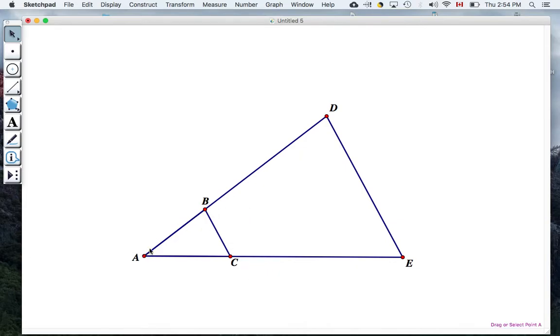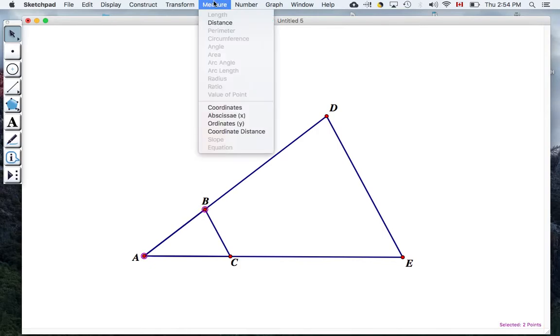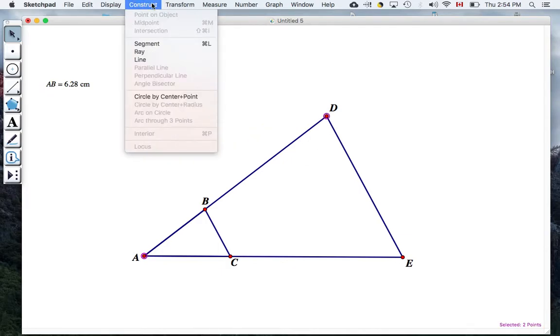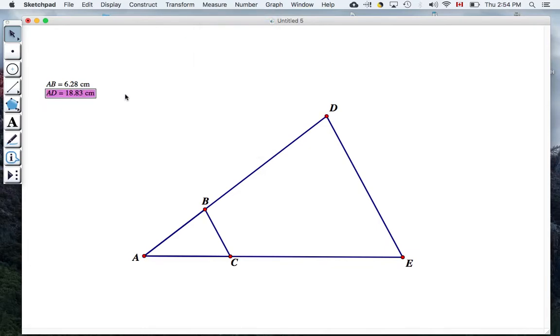Okay, so if I want to measure the length of AB, then I select A and I select B and I go to measure distance. And I get the length of AB is 6.28 centimeters. Now if I want to measure the length of A to D, I select those two and I go to measure their distance. And I'm going to compare those two side by side.